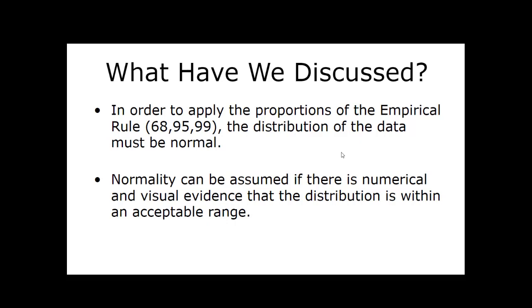In order to apply the proportions of the empirical rule — the 68-95-99 approximations — the distribution of the data must be normal. About 68% of the data will be within one standard deviation before and after the mean. About 95% will be within two standard deviations, and approximately 99% of all the data will be within three standard deviations of the mean.